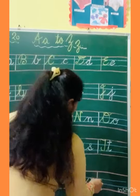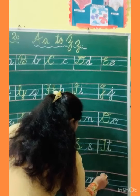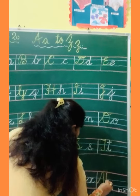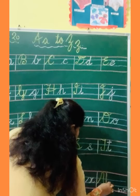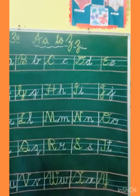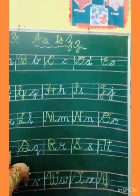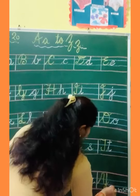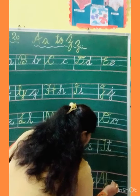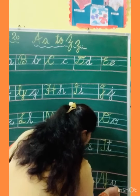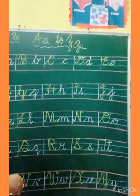Now Y. Make slanting line, turn, come down, go up, make slanting line, turn, and kick. This is capital Y. Now small Y: slanting, come down, go up, come down, touch the line, and go up.